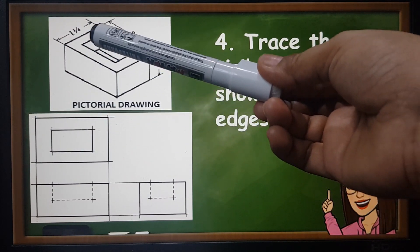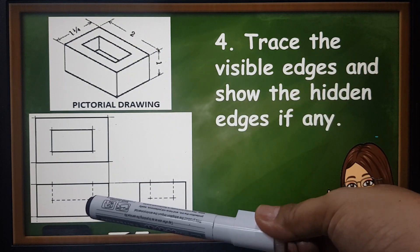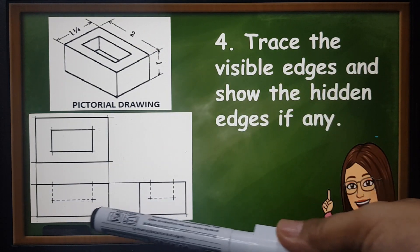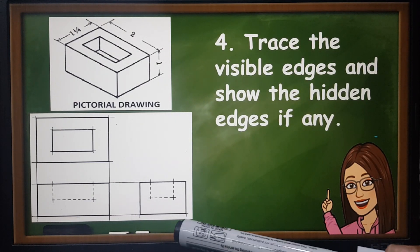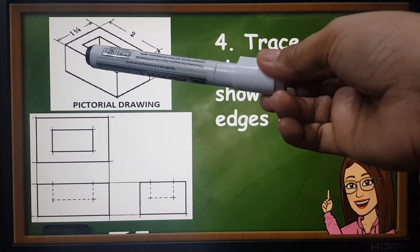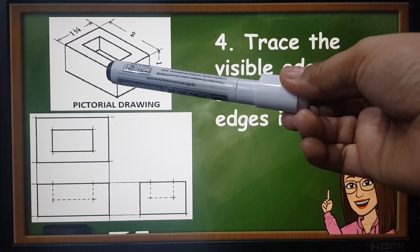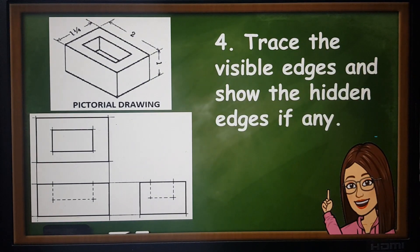this portion is hidden, therefore you're going to apply a series of short dashes to show that the part has been invisible or hidden. The same with the right side, this part is hidden portion, therefore you're going to apply invisible line.